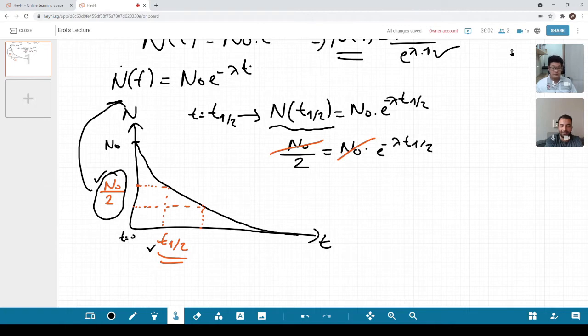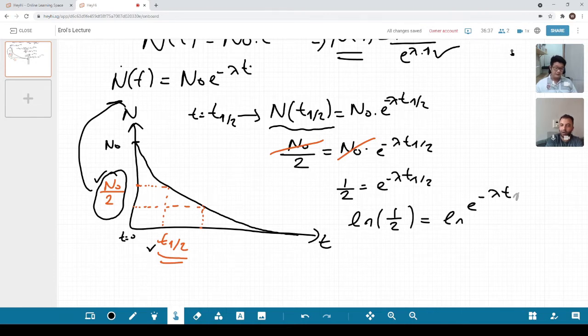Then if I continue, 1/2 is equal to e^(-λt₁/₂). However, I don't like this notation. So let's just change it to natural logarithm. How can I get rid of e? You log both sides. I have to take the natural logarithm of both sides. So it is ln(1/2) equals ln(e^(-λt₁/₂)).